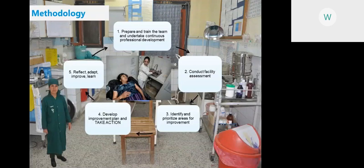On to the methodology. WASH FIT is based on the water safety plan methodology — a cyclical process where you start at step one and continue through to step five, then start again. It's not something that can be completed as a one-off exercise; it's an ongoing process that facilities can integrate into their facility management. We'll start at step two and come back to step one at the end.